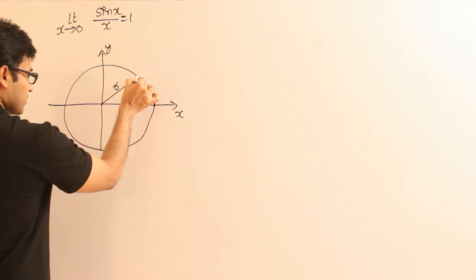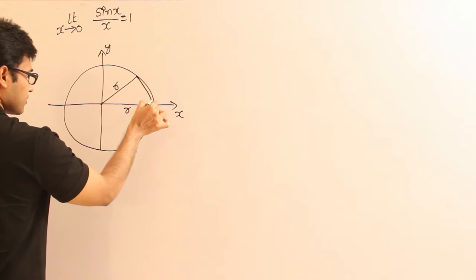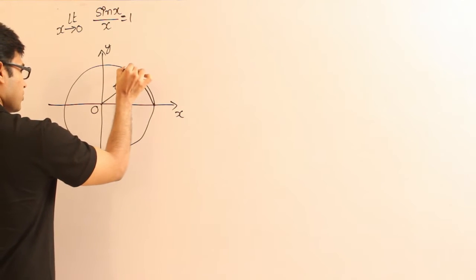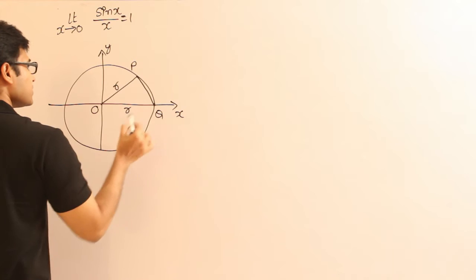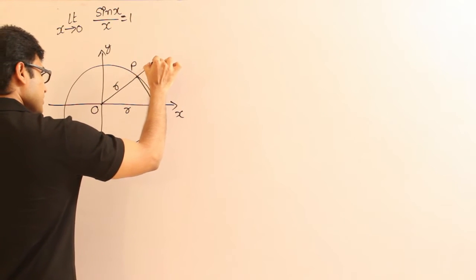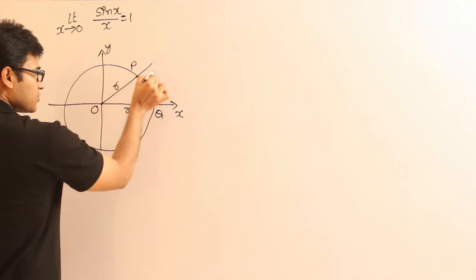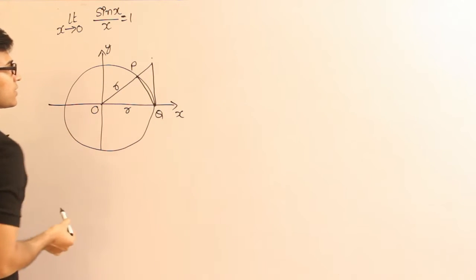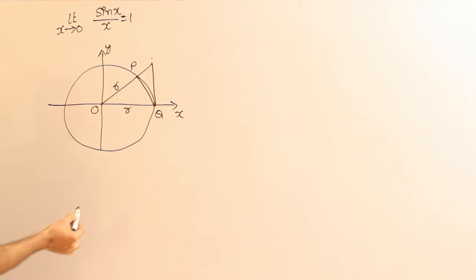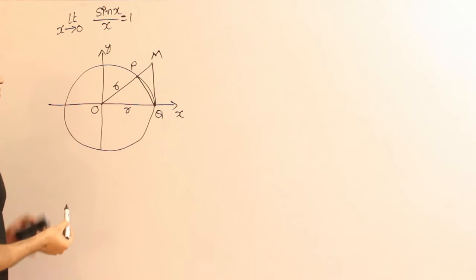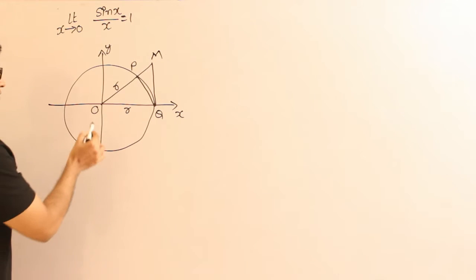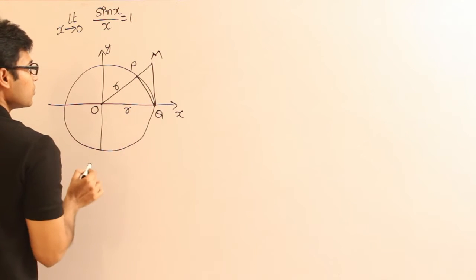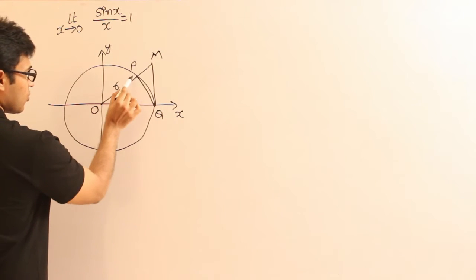I want to connect a line from here to here. Let us call this point as P and this point as Q. Now I want to extend this line further and draw a tangent at this point, and let me call that point M. So now we have two triangles: one triangle is O, P, Q; the other triangle is O, M, Q. And then one sector, which is sector O, P, Q.